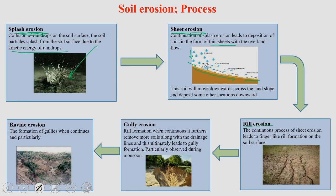Next is rill erosion. This is again a continuous process of sheet erosion where it leads to finger-like rill formation on the soil surface — this is the important point to note. This form of erosion we call rill erosion. The next is gully erosion. When these small rills, through continuous erosion, become bigger in size, they ultimately lead to the formation of a gully. The soil gets separated and this area becomes larger and larger — we call it a gully. Gully erosion takes place because of extensive erosion.